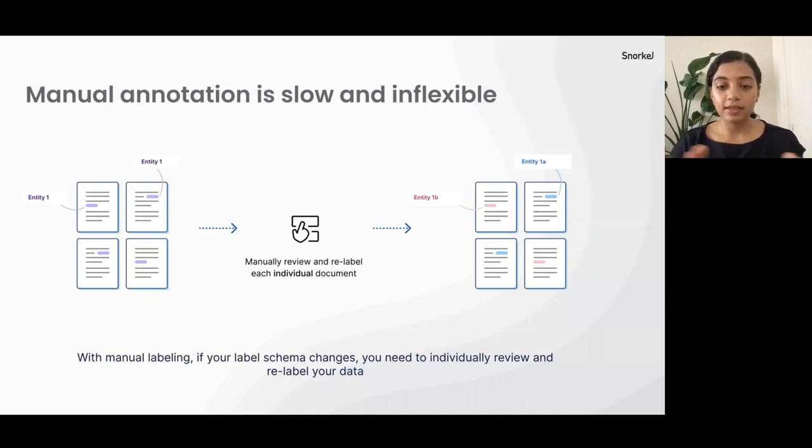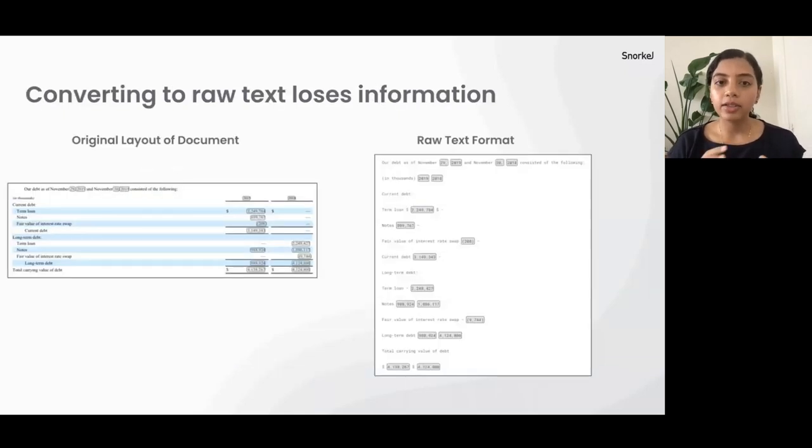So, you might say that I can manually annotate my data and train my own models to be able to extract out these values. But there's a range of problems associated with that. The first is, manual annotation is really slow and can also be really expensive. Imagine you had clinical trial reports and you needed doctors to go annotate those documents. That's not the best use of their time, and it's probably also going to be quite expensive for you to put together that dataset, just in terms of the number of hours clinicians are spending on it.